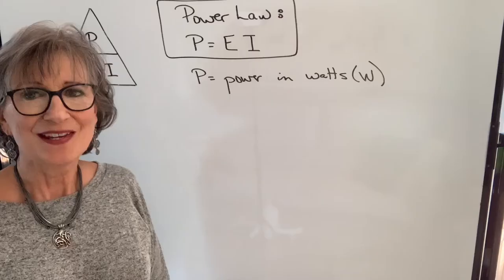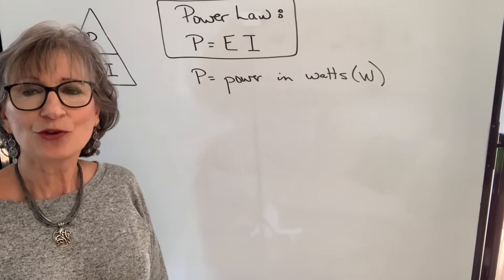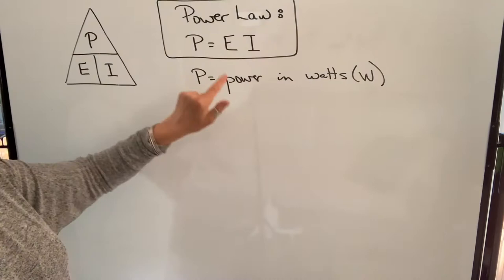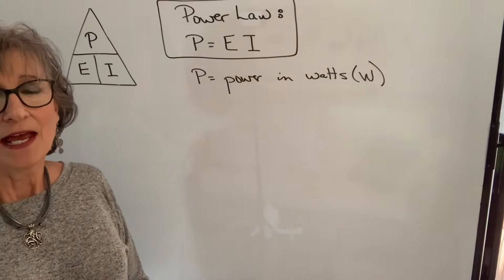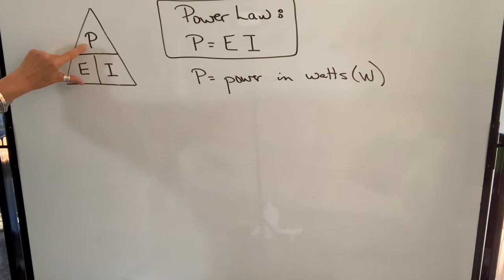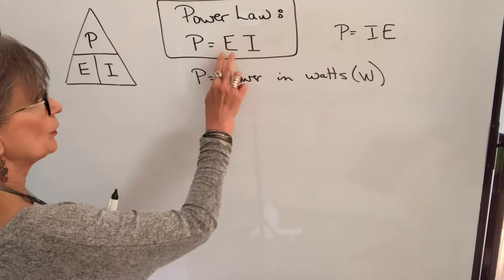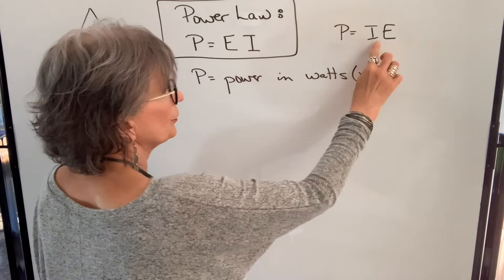Another formula you're going to see in electricity is the power law. And the power law states that the power, which is measured in watts, symbol for watts is capital W, is equal to the voltage times current. And we can remember that relationship with another triangle. Power is equal to E times I. What you might want to do to remember this triangle is think of the word pie. This formula and this formula are the same. Typically, you will see it written like this. But I can change the order of the variables when you're multiplying and it's still equivalent.